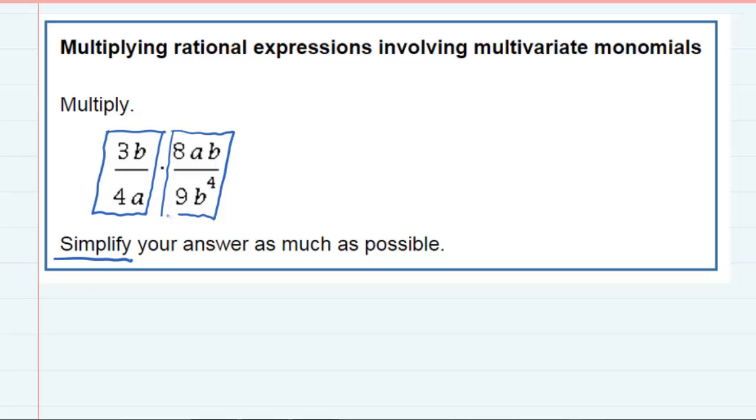The one on the right hand side, however, can be simplified at least a little. I've got an 8 and a 9, no common factors to cancel. There's an A in the top, but nothing in the bottom. But then for the B's, I do have one B in the top and four B's in the bottom.